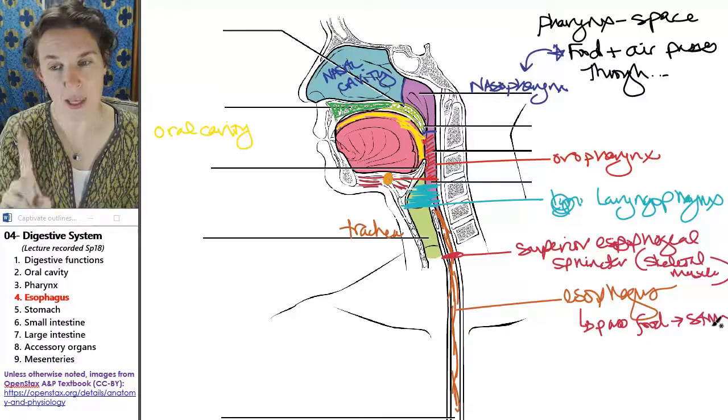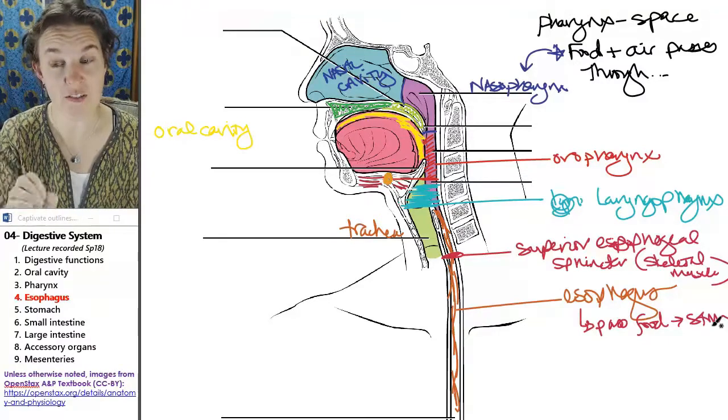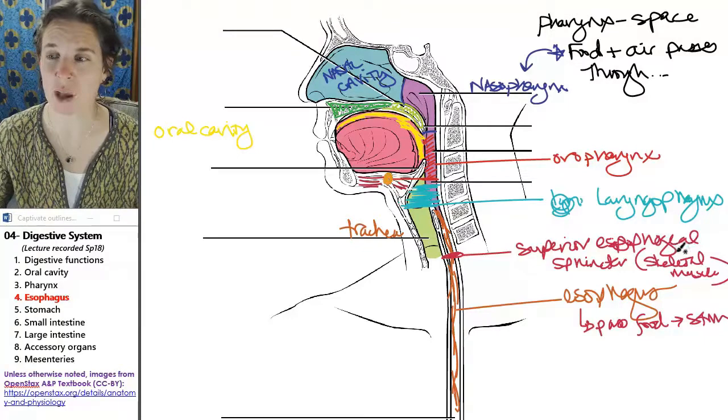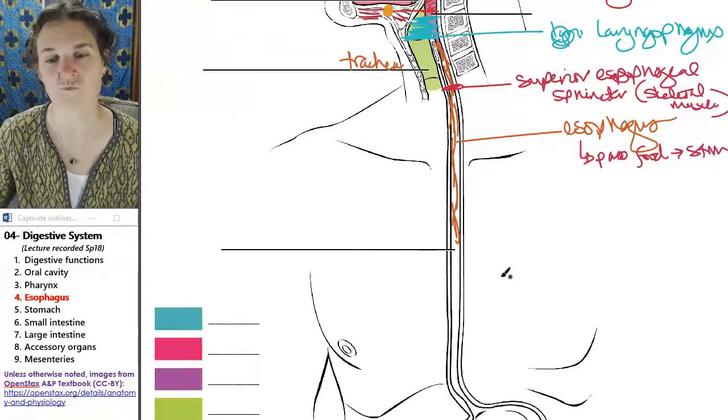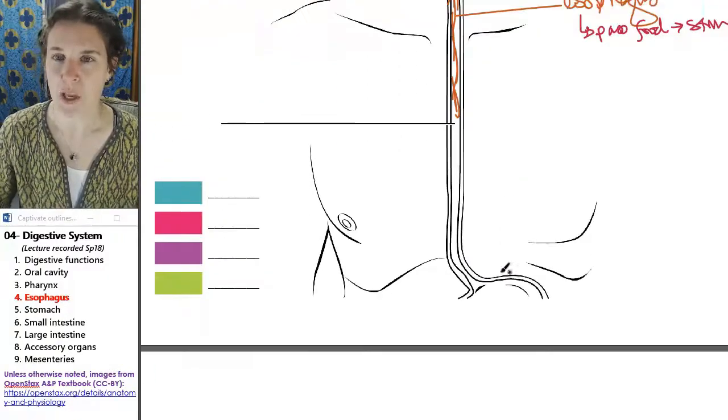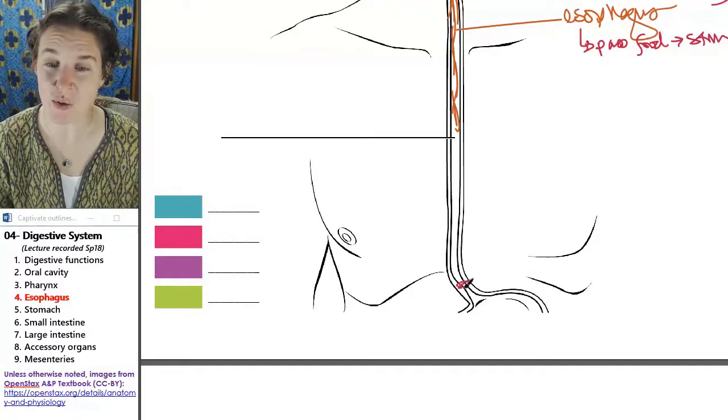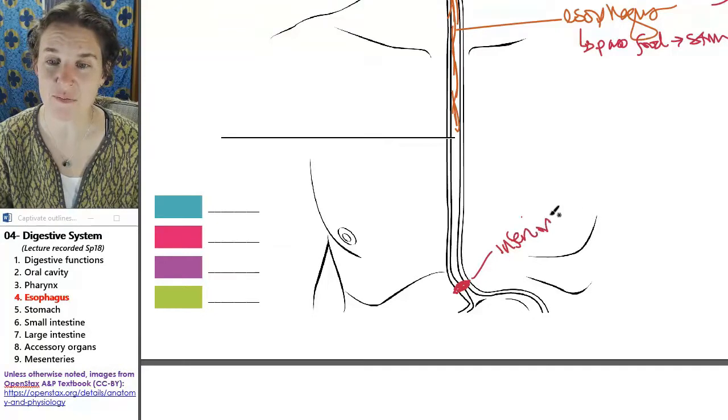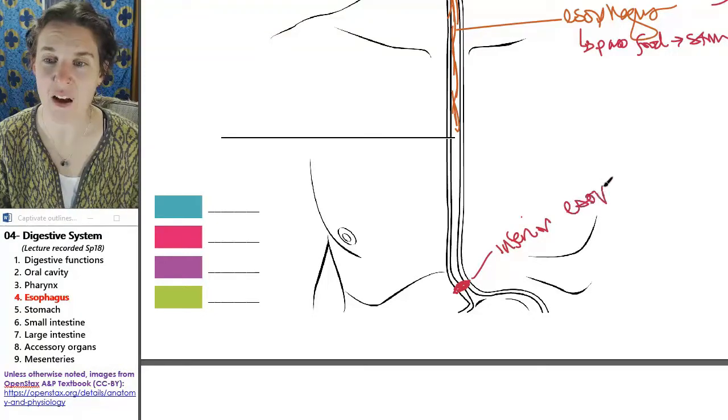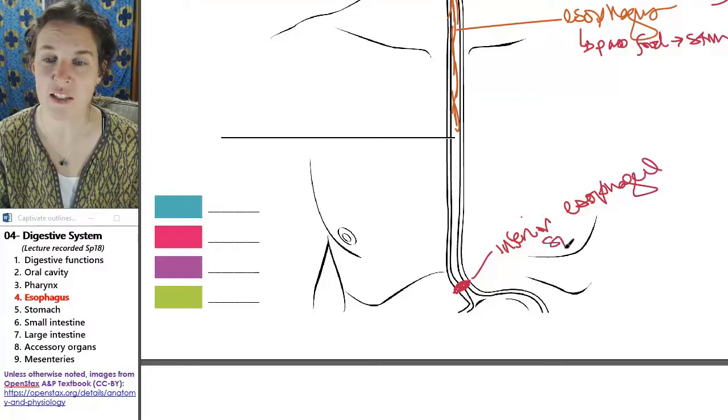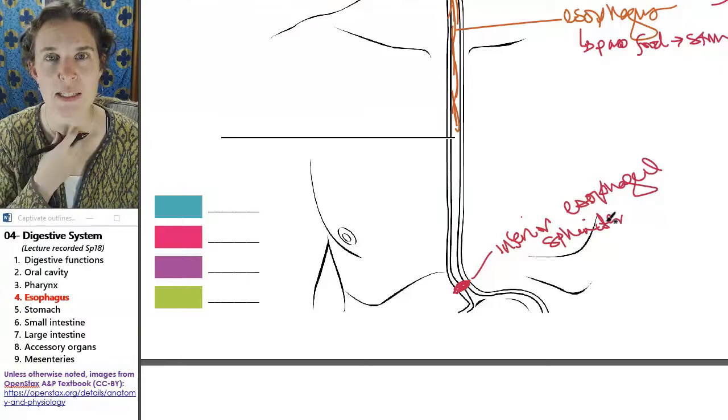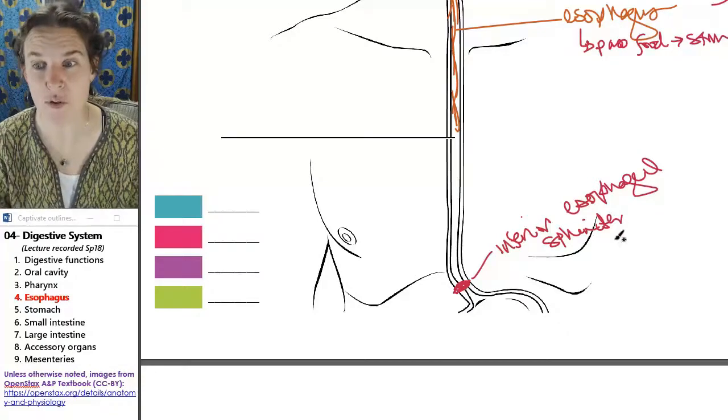If you have a superior esophageal sphincter made of skeletal muscle, what do you think you also have? You do. The esophagus leads to your stomach, and you actually do have an inferior esophageal sphincter and that is made of smooth muscle.